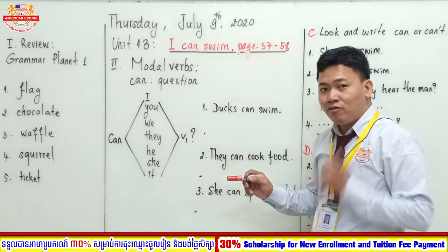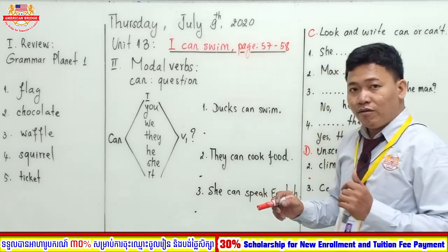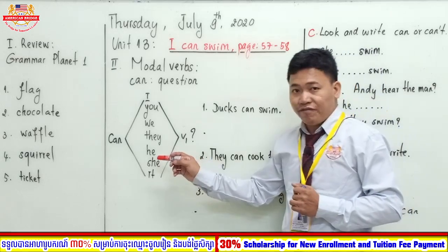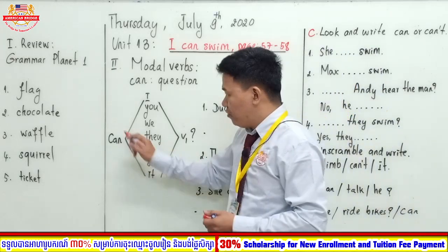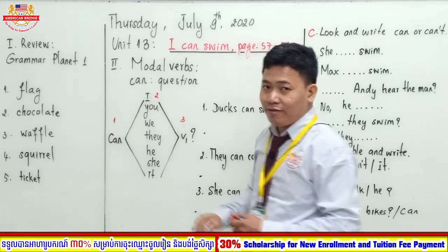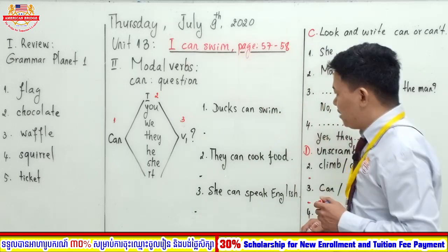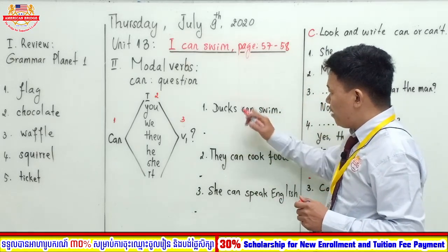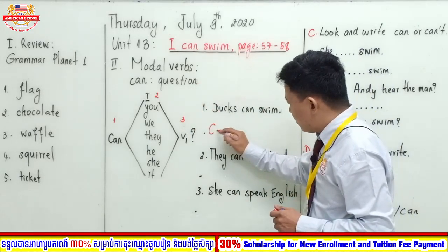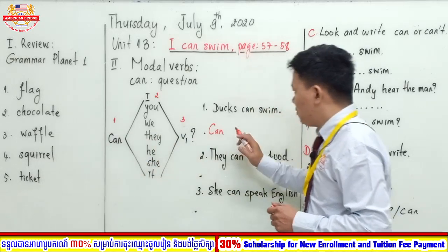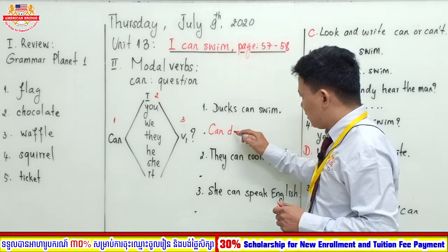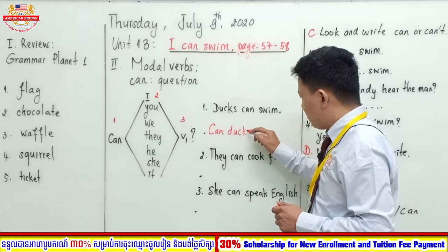Now we need to change the affirmative form to a question. How can we do that? We need to look at the form. We put 'can' first, then we put the subject pronoun, and the last one we put verb one. So follow the form: 'Ducks can swim' — we move 'can' to put at the beginning of the sentence. Can... and then the subject: ducks. Can ducks swim?